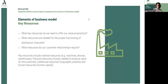Now, let's move to another element of the business model. Key resources are the necessary tangible and intangible assets that the company needs to generate and deliver the right value to the customer. Resources are not only money, machines, or product materials, but also people or intellectual resources. Resources are more valuable the more unique or difficult to replicate they are, and the more they distinguish us from the competition. Resources include material resources such as machines, devices, and warehouses; financial resources such as money needed to produce value; intellectual resources such as patents or copyrights; and human resources — human capital.